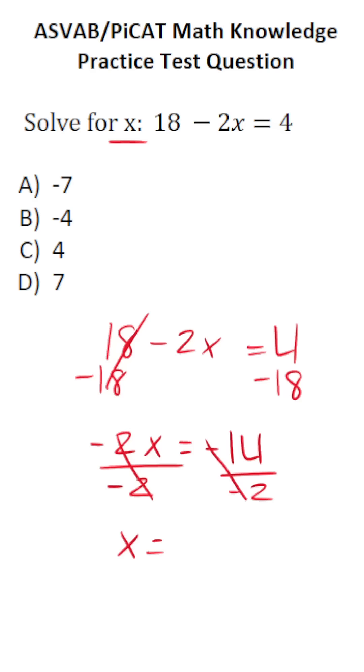A negative divided by a negative is going to be a positive. Negative 14 divided by negative 2 is positive 7. So this one is D, 7.